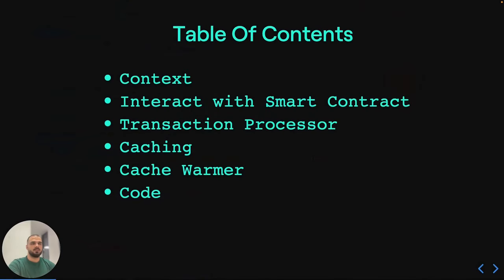The structure of the presentation is the following. First, I will be talking about the context of the presentation, explaining the examples and what we are trying to achieve here, how to interact with the smart contract, then we will deep dive into more advanced concepts like Transaction Processor, Caching — why and how to use it — Cache Warmer, and at the end we will take a look at the code itself.